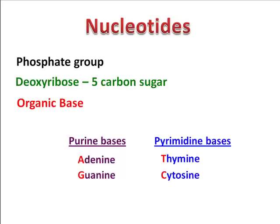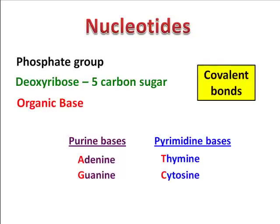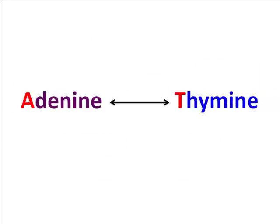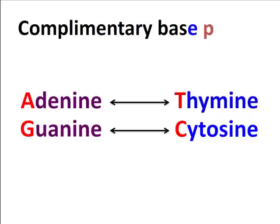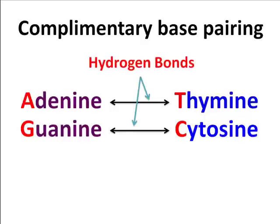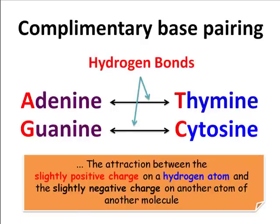The nucleotides are held together by strong covalent bonds between the phosphate groups and the deoxyribose sugar. So how do they pair up? Adenine pairs with thymine, and guanine pairs with cytosine — so A pairs with T, and G pairs with C. This is called complementary base pairing, and is due to the amount of rings they have in their structure. They are joined together by hydrogen bonds, which are the attraction between the slightly positive charge on a hydrogen atom and the slightly negative charge on another atom of another molecule.